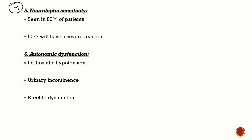Patients have neuroleptic sensitivity — they are very sensitive to antipsychotic drugs. This occurs in about 80% of patients, and around 50% will have a severe reaction to antipsychotic drugs. Patients also have features of autonomic dysfunction like orthostatic hypotension, urinary incontinence, constipation, and erectile dysfunction.